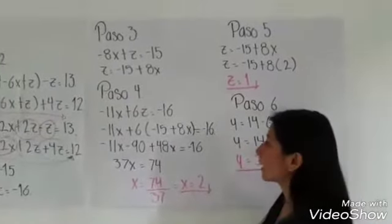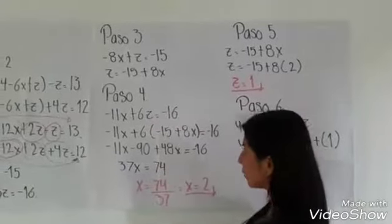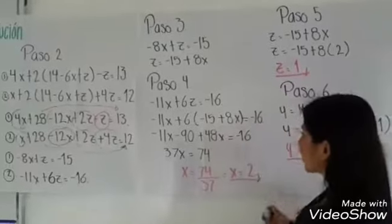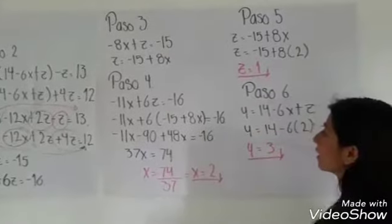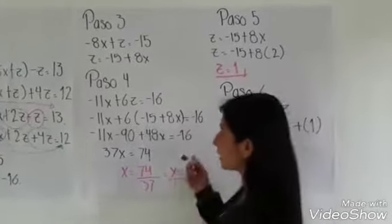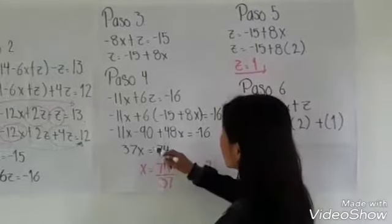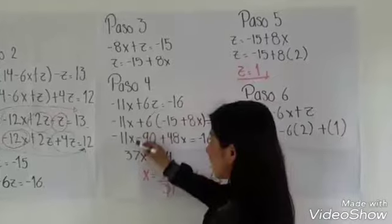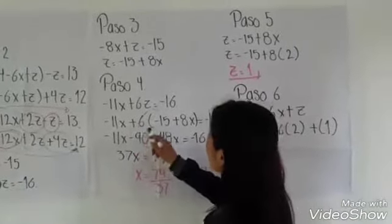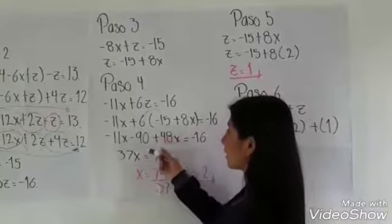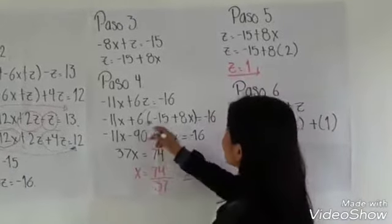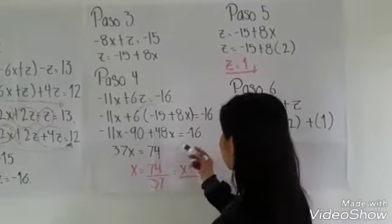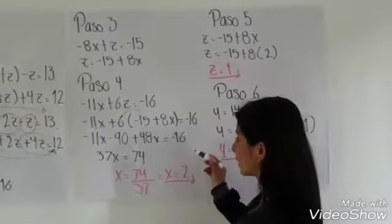El paso 4 es sustituir Z con lo que nos había salido, que es menos 11X más 6, paréntesis, menos 15 más 8X, es igual a menos 16. Entonces multiplicamos: el 11 baja como menos 11X, y se multiplica 6 por menos 15 que es igual a menos 90, más 6 por más 8X que es más 48X, y es igual a menos 16.